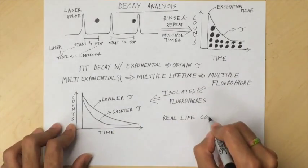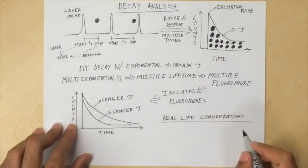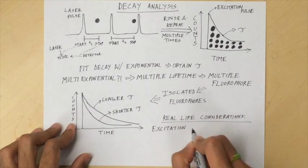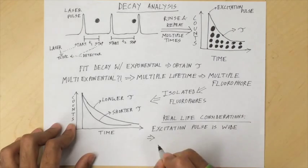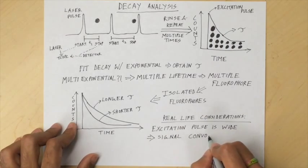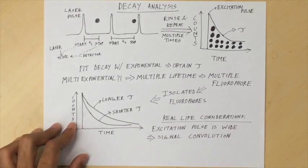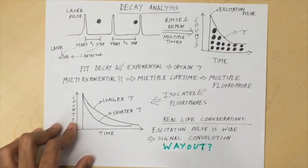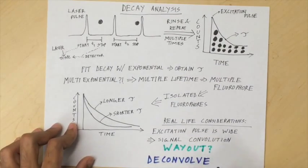Lastly, in real life the excitation pulse is not a delta pulse, which implies that it is wide, thereby leading to convolution of signals. Hence, deconvolution of the instrumental response function from the decay function must be carried out to obtain the true signal.